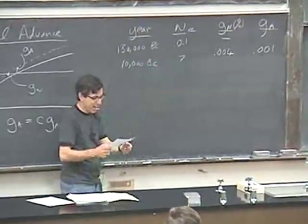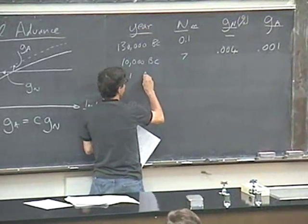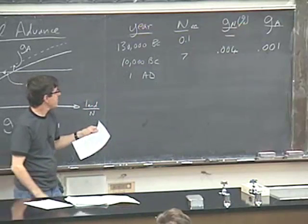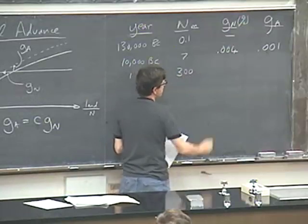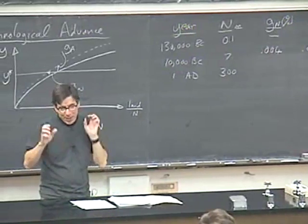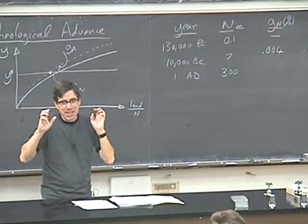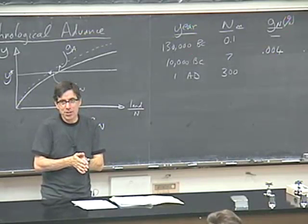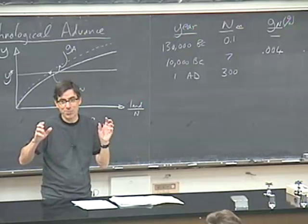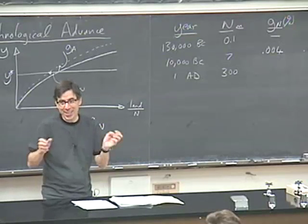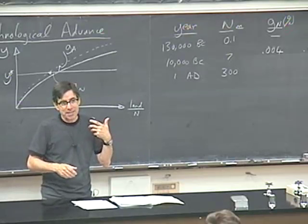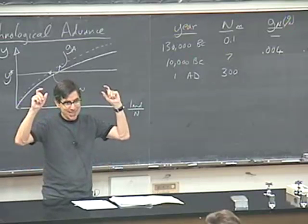Now we're getting to the point where we have settled agriculture. The next benchmark is 1 AD, and world population has roughly been estimated at 300 million. As I say, this estimate is of extremely low value. In Italy at that time, there's a debate about what the level of population is, where the numbers have ranged from one to three million — and that's one of the places we know best.